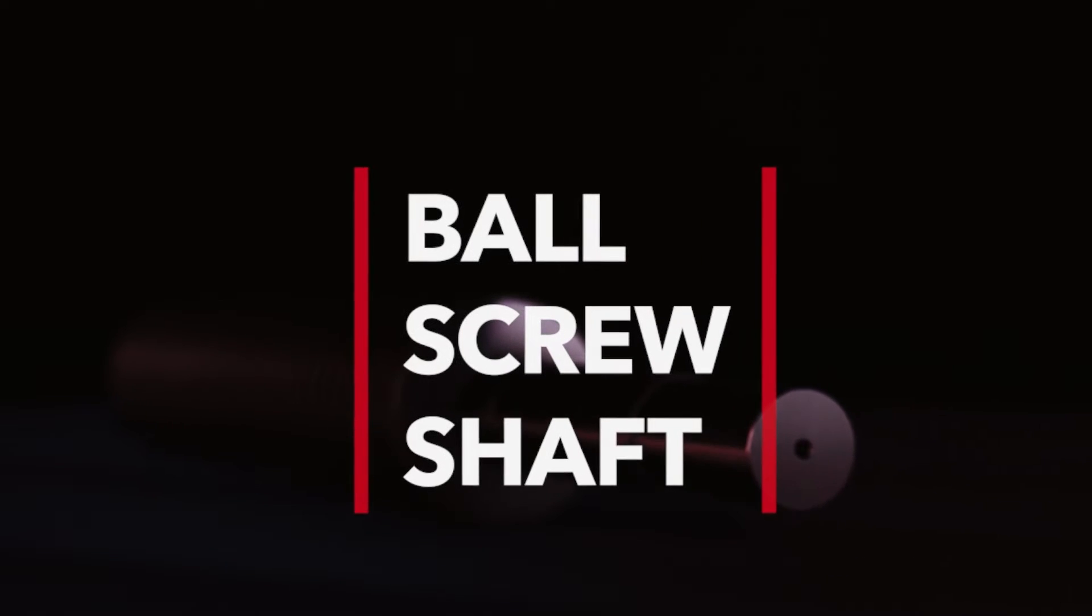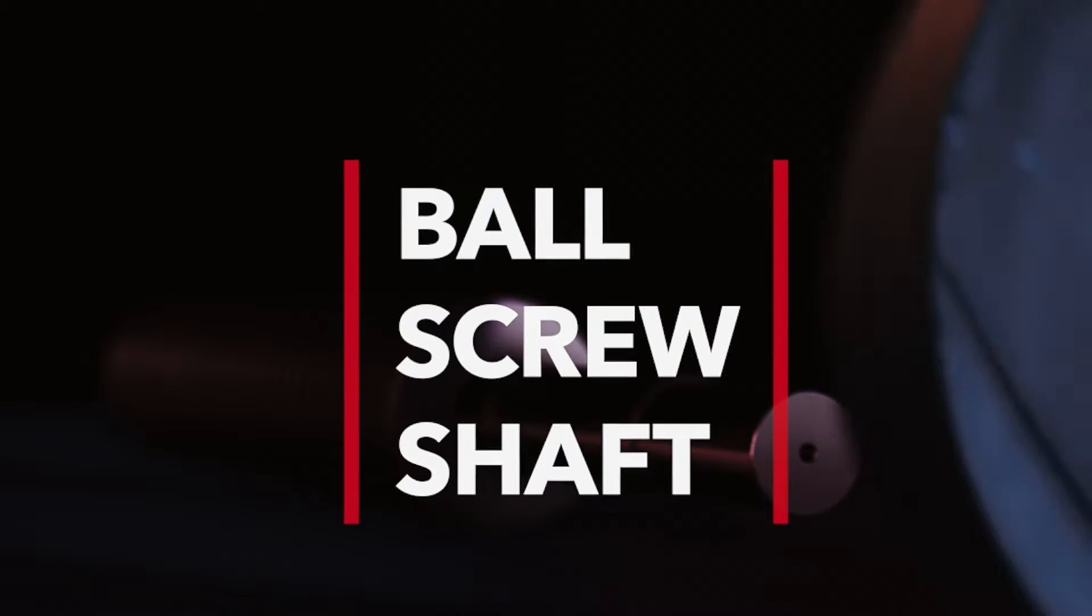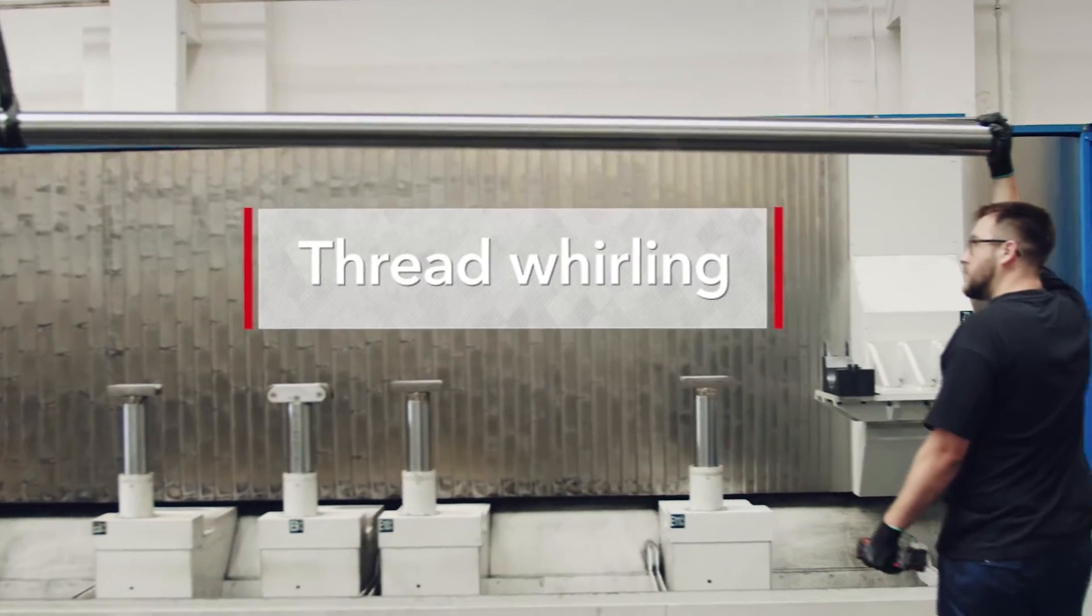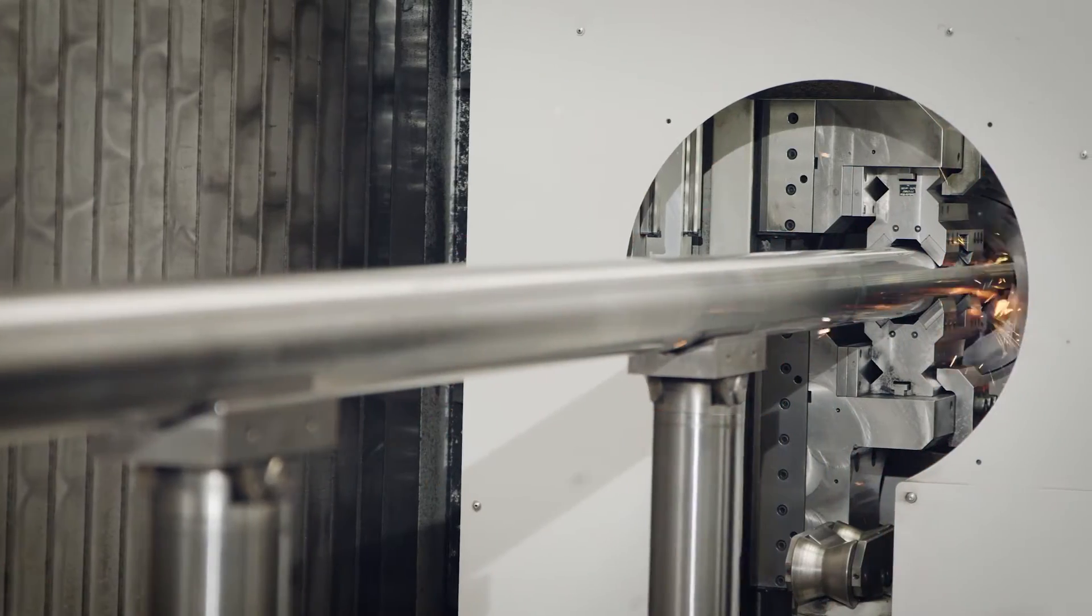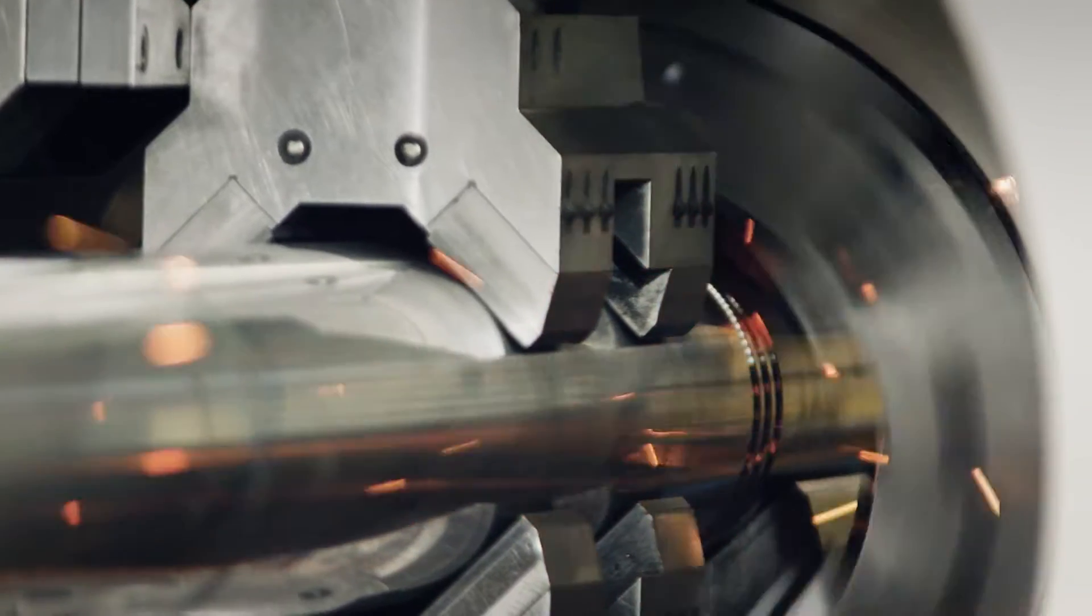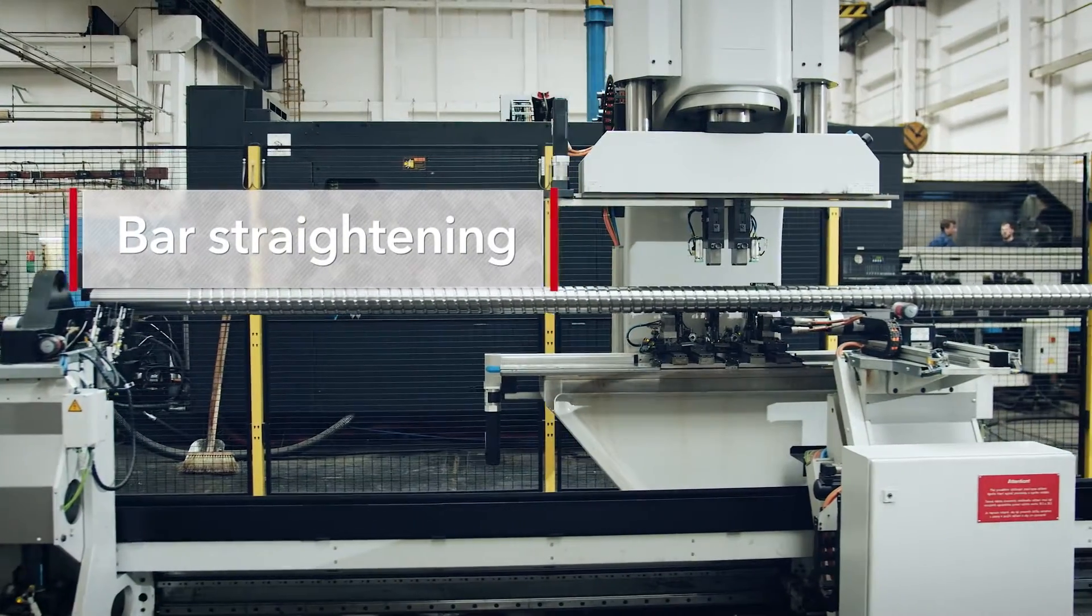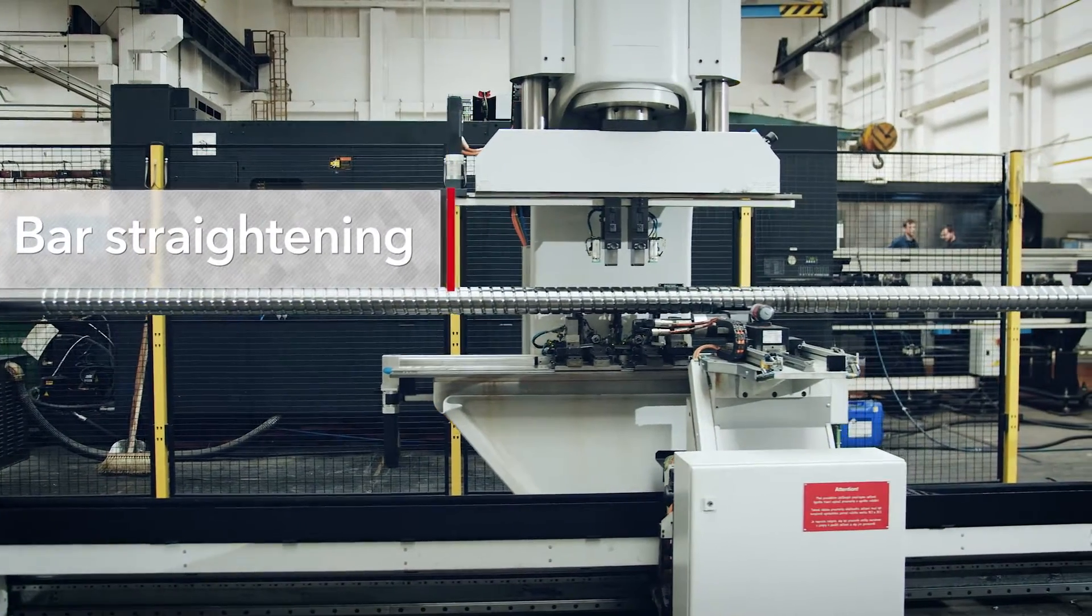Now let's take a look at our manufacturing process. The first step in shaft manufacturing is thread whirling. KSK's ball screws can be up to 200 mm in diameter and up to 15.5 m long. The thread whirling process disrupts the material's fibrous structure, so the bar now has to be straightened.